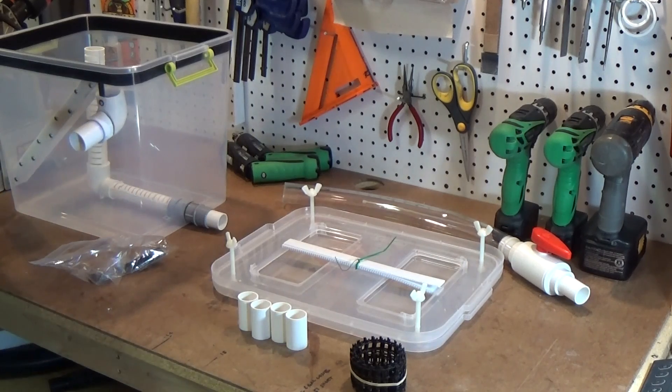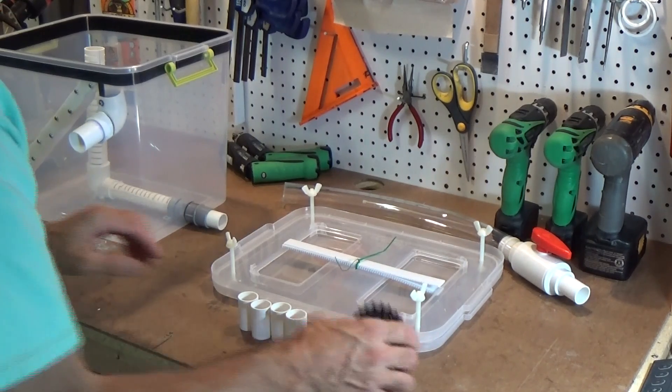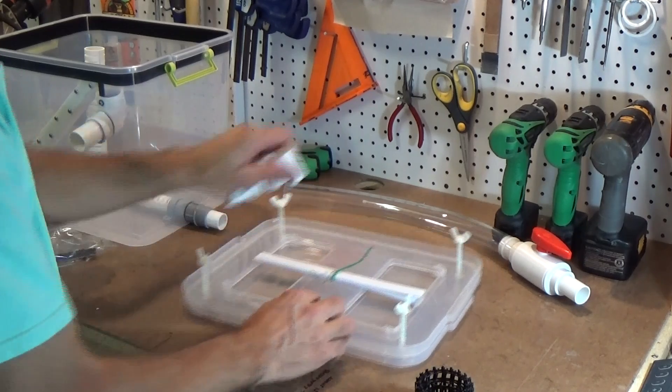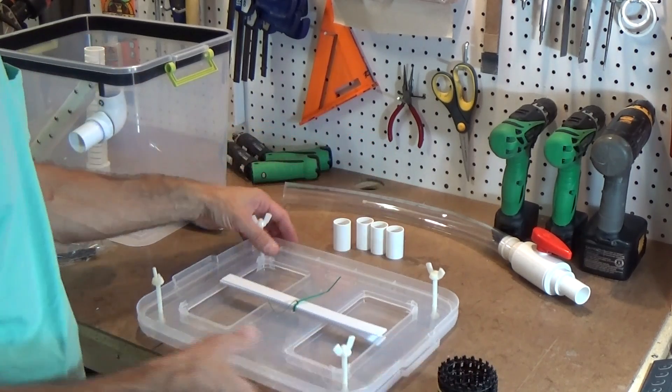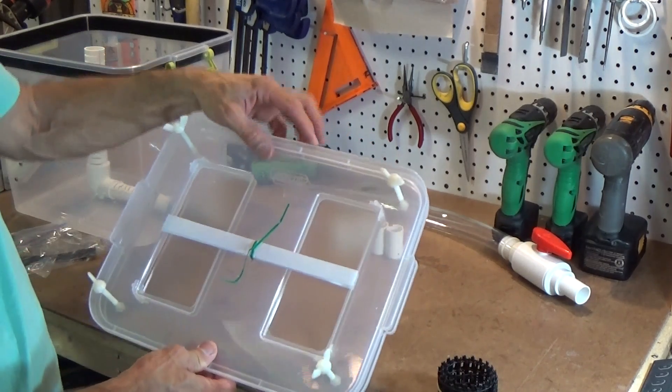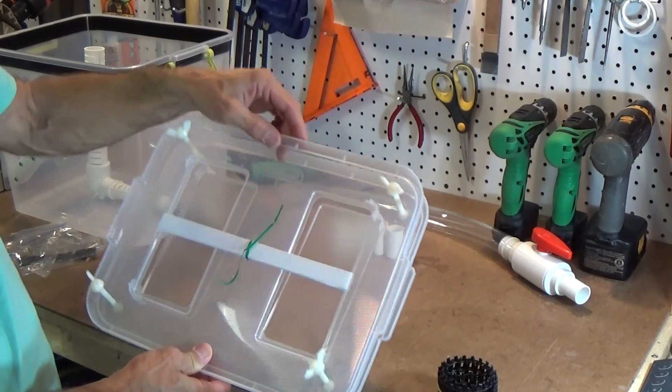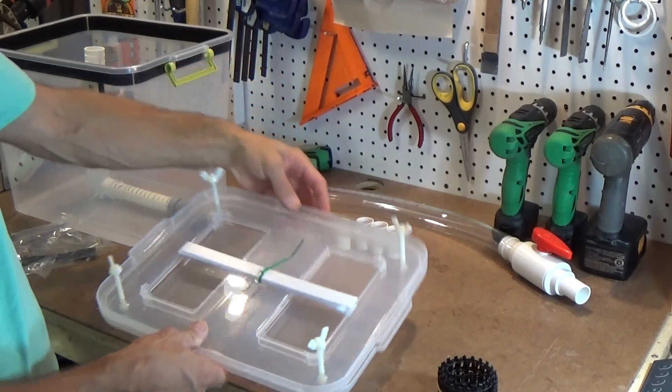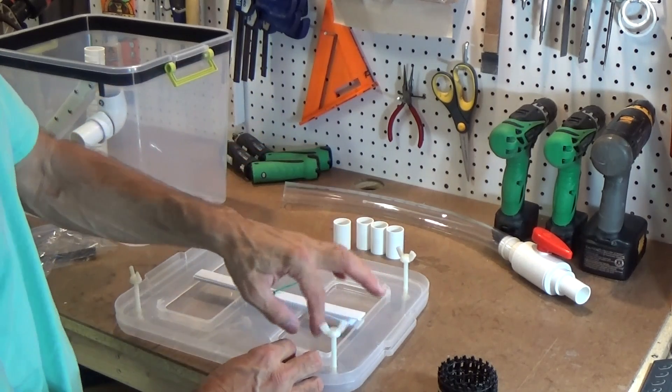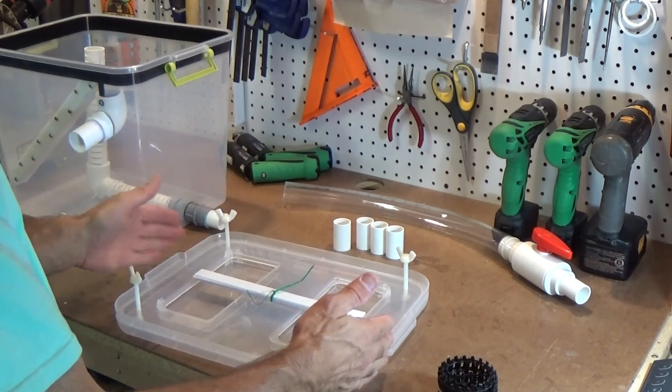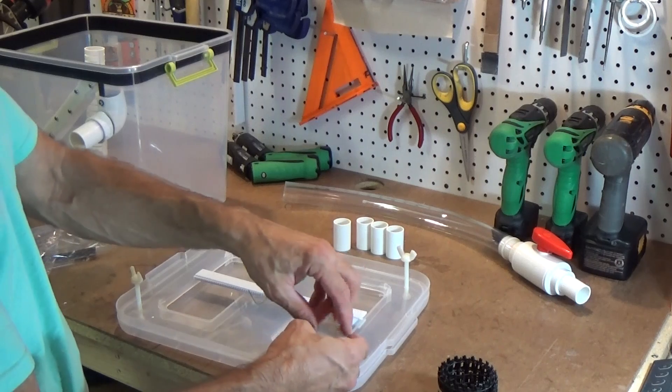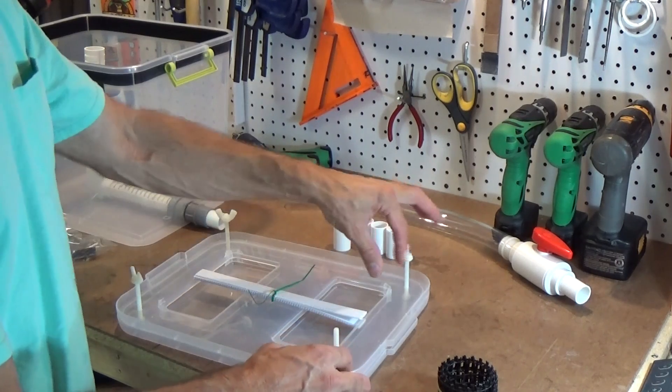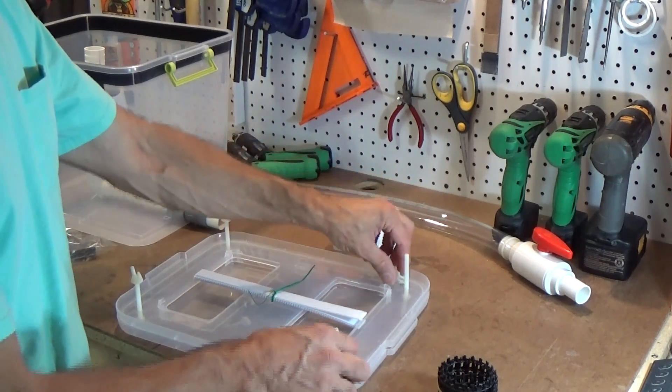First, let's do the lid. So the thing to keep in mind with the lid is that you want to keep the two logos oriented. The top and the bottom lid each have a Sterilite logo, and you want to keep those aligned because that's the way it fits together best. So essentially, you're just going to take this apart, keep it oriented the same way. Just install the spacers and the mesh and put it back together. It's really that easy.